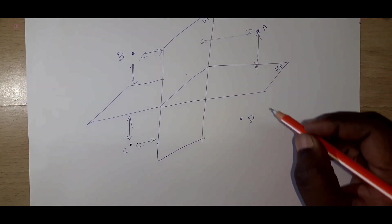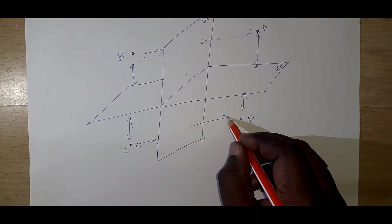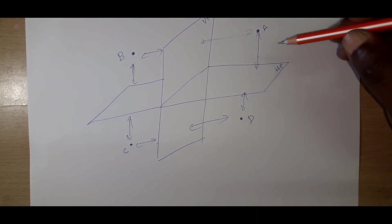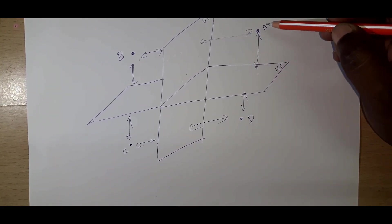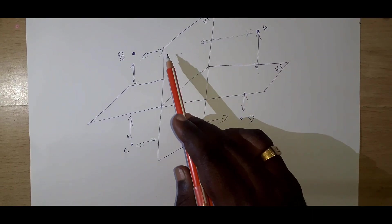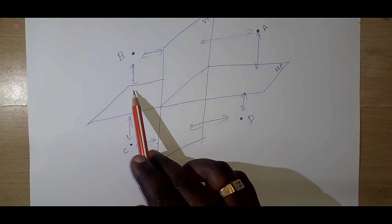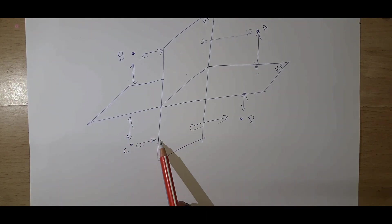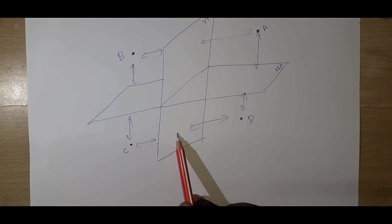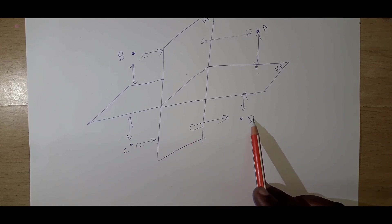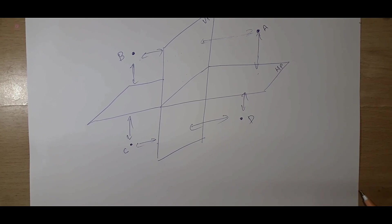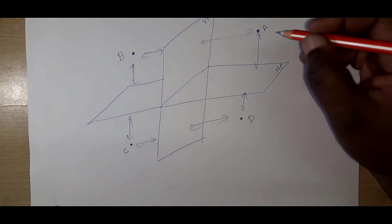The fourth quadrant has object D: it is below the horizontal plane and in front of the vertical plane. To summarize: first quadrant — above HP, in front of VP; second quadrant — above HP, behind VP; third quadrant — below HP, behind VP; fourth quadrant — below HP, in front of VP.